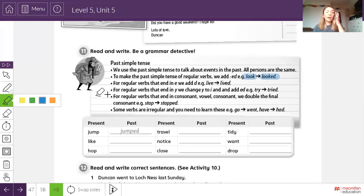Luego dice, for regular verbs that end in e, we add the d. For example, live, queda lived. ¿Qué quiere decir esto? Cuando tienes un verbo regular que termina en la vocal e, tú solo agregas la d al final. Como en el caso del live, lived.